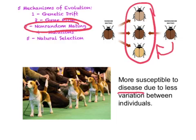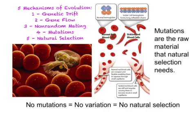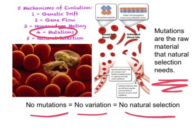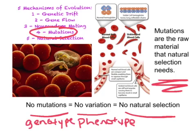The fourth condition of Hardy-Weinberg is that there are no mutations, so mutations are the fourth mechanism of evolution. Mutations are the random change in genetic material. As mutations accumulate in a population, they can cause changes in allelic frequencies and thus violate genetic equilibrium. Mutations can be harmful, neutral — most are neutral — or advantageous. An advantageous mutation will be selected for through natural selection and becomes more common in later generations. Therefore, mutations are the raw material on which natural selection works. Without mutations, there is no variation, which means no natural selection and therefore no evolution. Remember that natural selection only works on variations you can see — the phenotype — while mutations are part of the genotype.